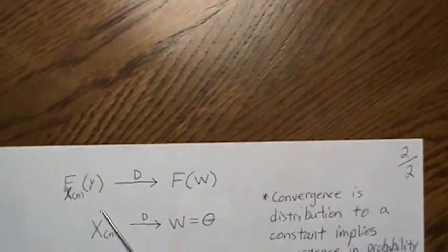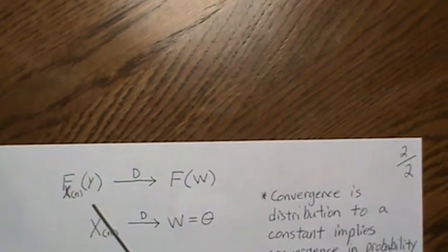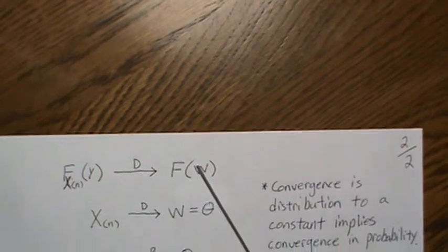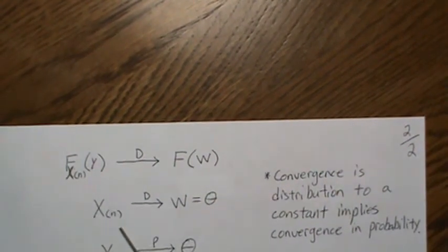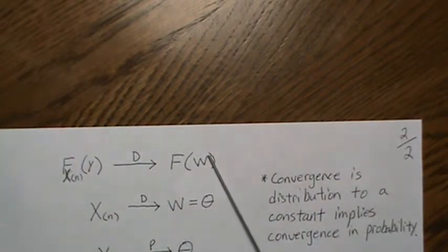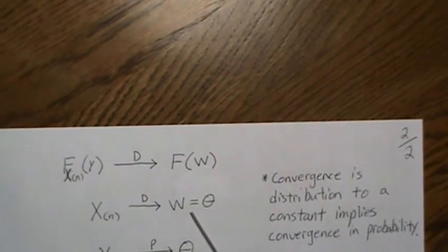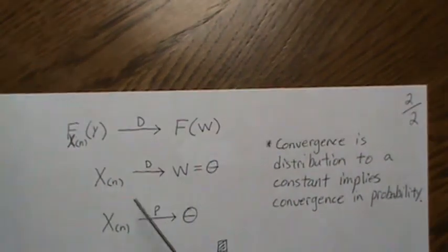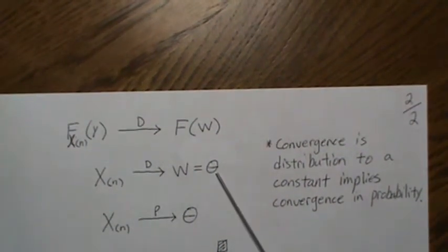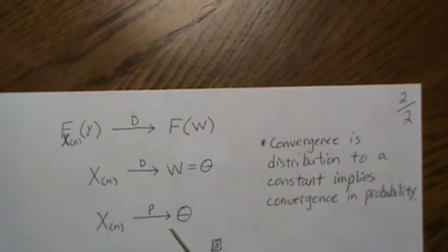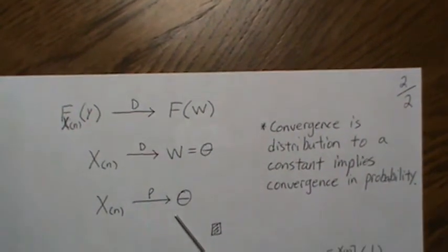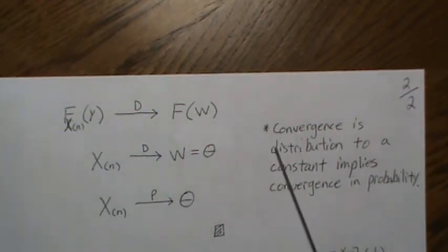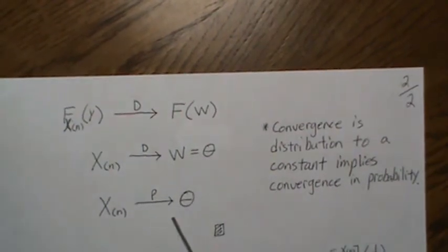So what we showed is the nth order statistic converges in distribution to some function here. Well, and you can rewrite that as the nth order statistic converges to w, this random variable. But w is always equal to theta, so it's a constant. And convergence in distribution to a constant implies convergence in probability. And that was in one of my earlier videos. We proved that. So there it is. That's the proof.